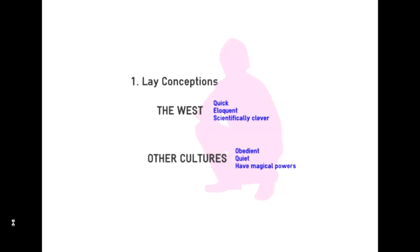Number one: lay conceptions. Lay is a word we use to describe a normal person who doesn't have expert knowledge of a subject. So lay conceptions are the ideas of people without specialist knowledge. Looking back about a hundred and fifty years ago — in the middle of the 1800s — in the West, such as Western Europe or the United States, if you were quick, if you were eloquent (meaning if you spoke well), or if you were scientifically clever, then you were considered to be intelligent.